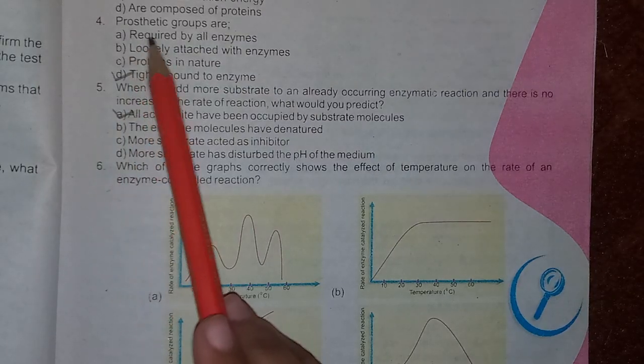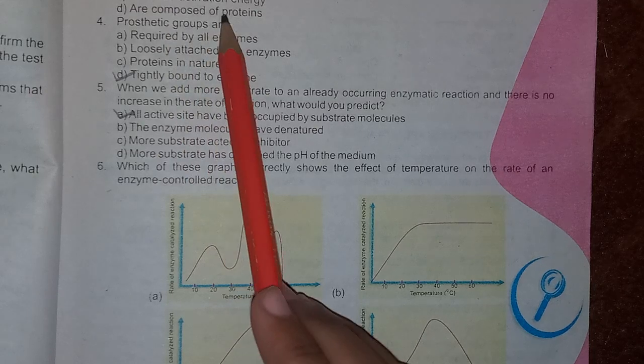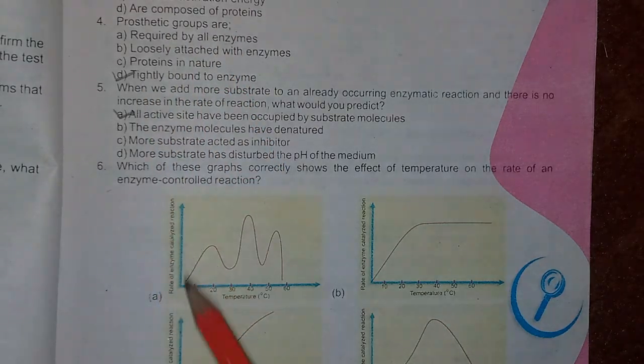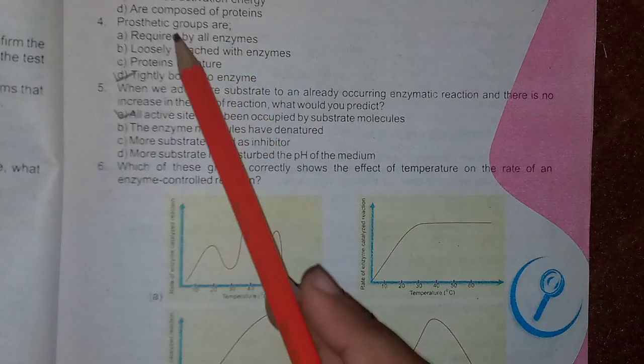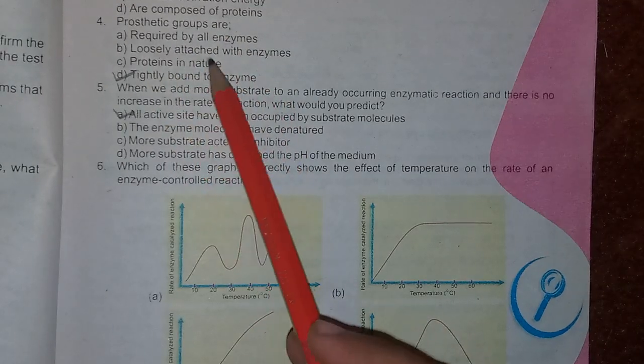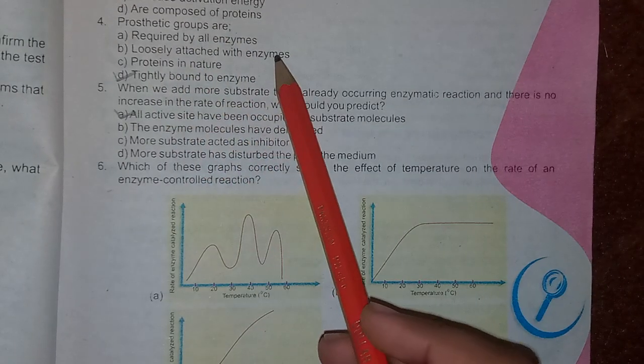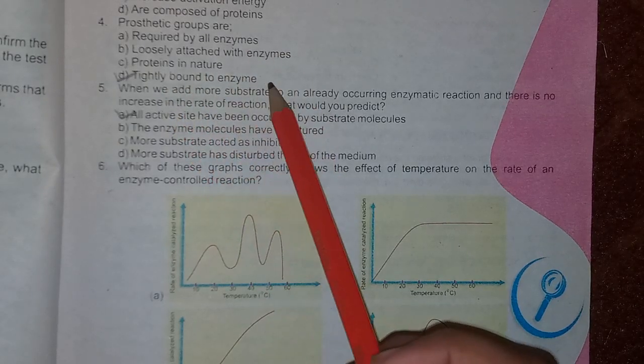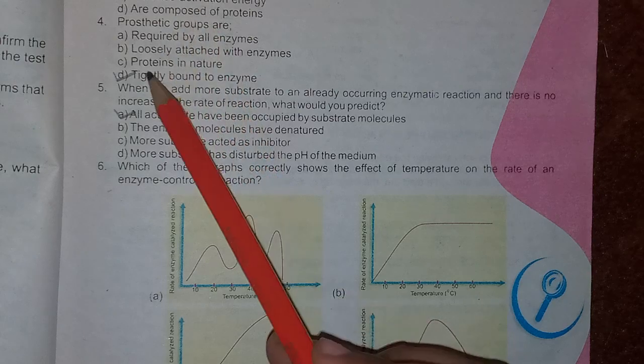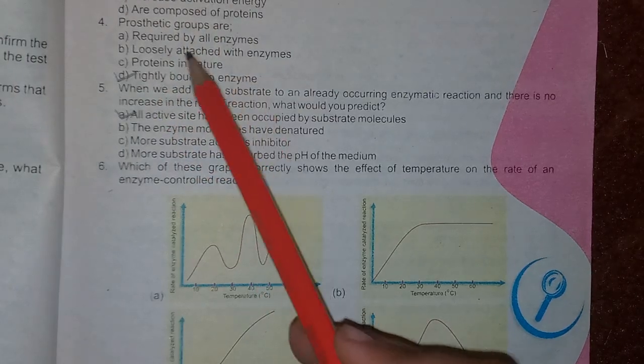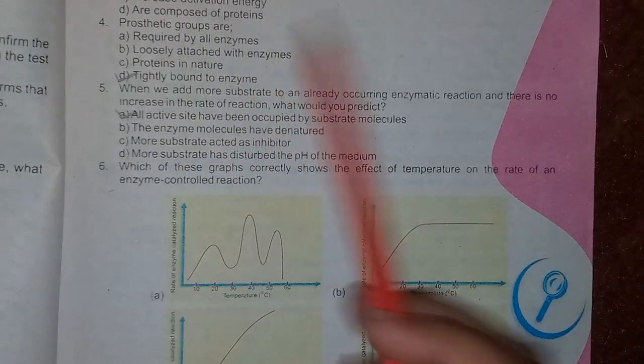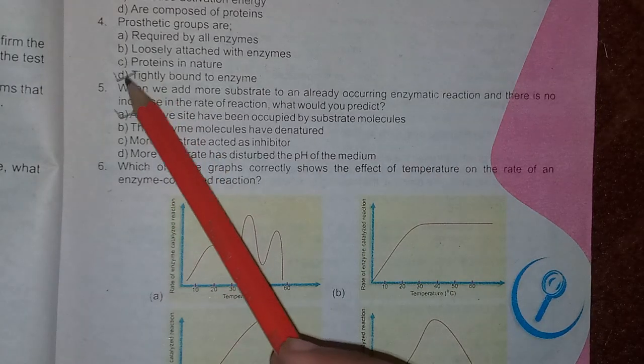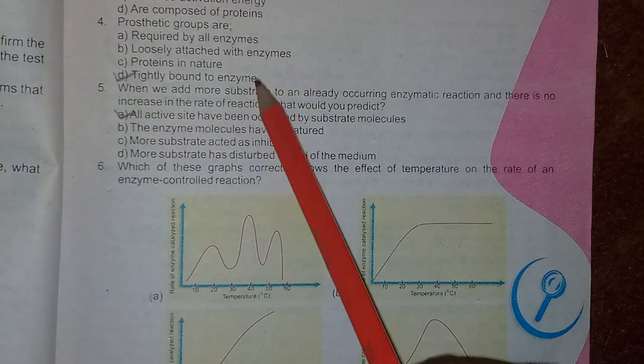Next, MCQ number 4. Prosthetic groups are - the options include: required by all enzymes, loosely attached with enzymes, proteins in nature, or tightly bound to enzyme. Coenzymes are loosely attached with enzymes. Prosthetic groups are tightly bound to enzyme. The correct answer is option D: tightly bound to enzyme.